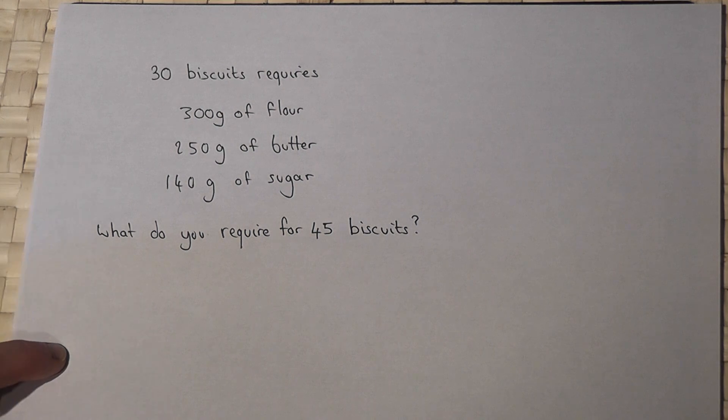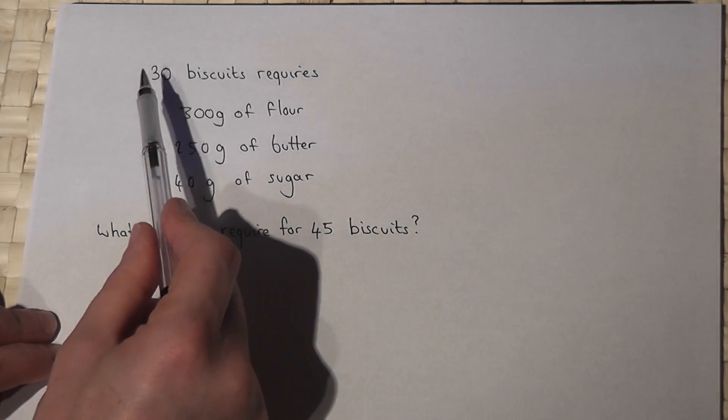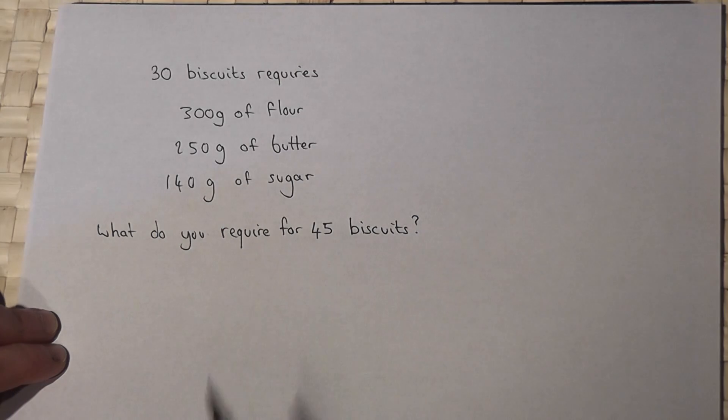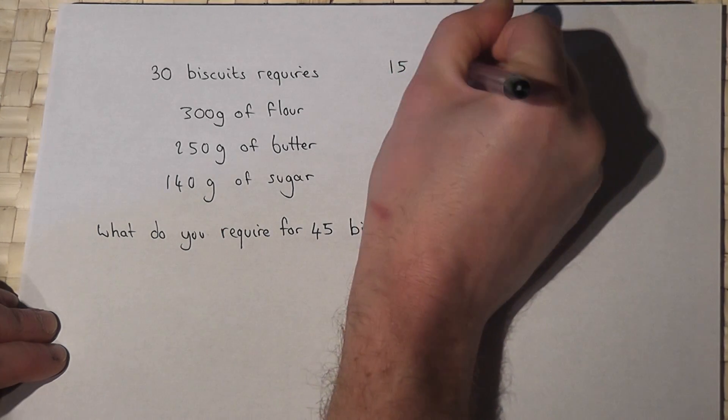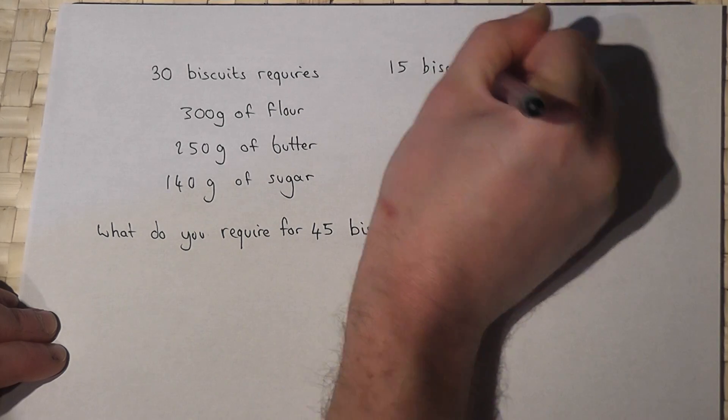Now the method here is to think, if this is what's required for 30 biscuits, I must make another 15 biscuits to get to 45 in total.